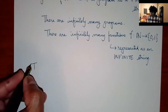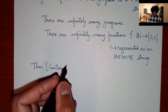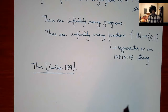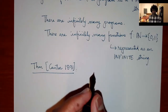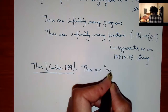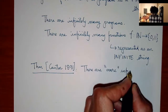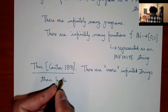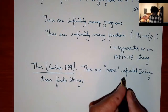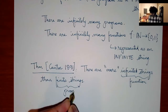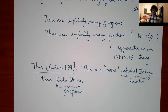Let me now state a profound theorem by Cantor in 1891 — a statement that shook the foundations of mathematics, and one he actually had difficulty publishing. What he says is: there are more infinite strings than finite strings. Infinite strings correspond to functions; finite strings correspond to programs. So there are more functions than programs, which means some functions cannot be computed.